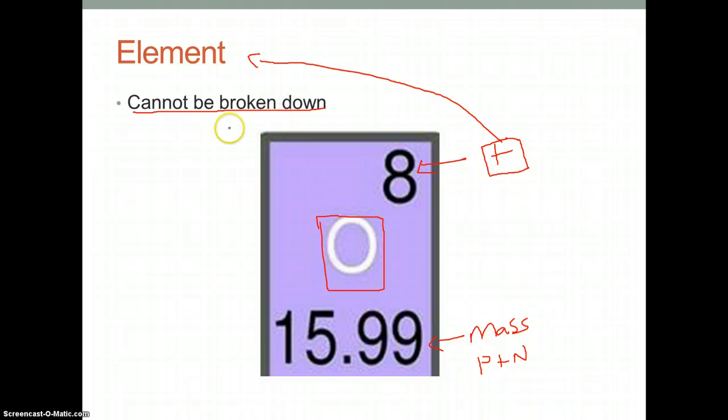Each atom in an element has to be identical. So the element oxygen has identical atoms which consist of eight protons each. If we do basic math, we can figure out that the atomic mass is approximately 16. There are eight protons, so that means there are eight neutrons.